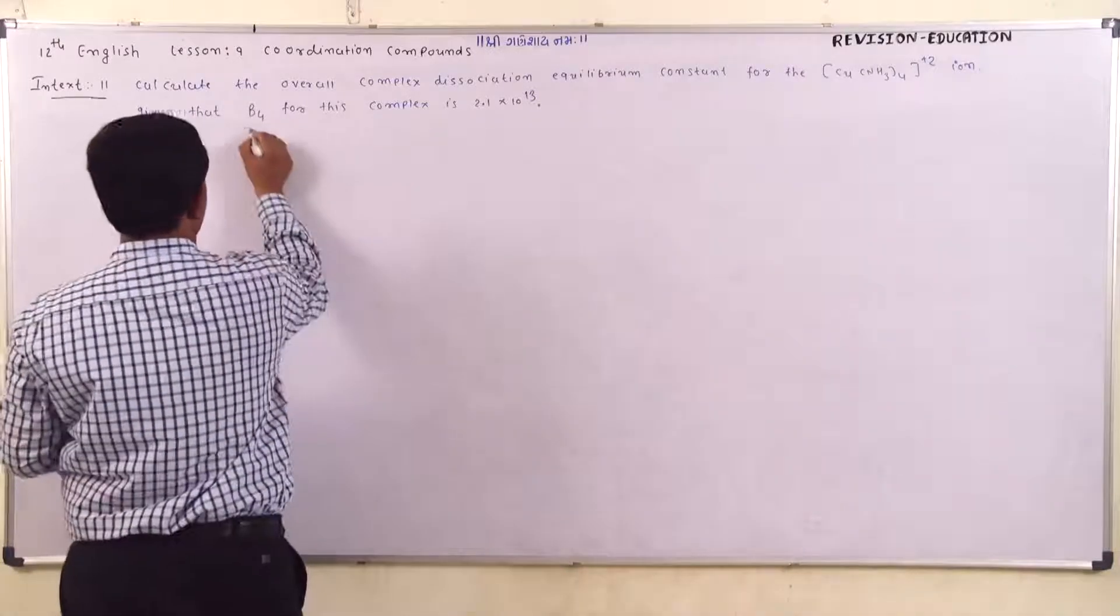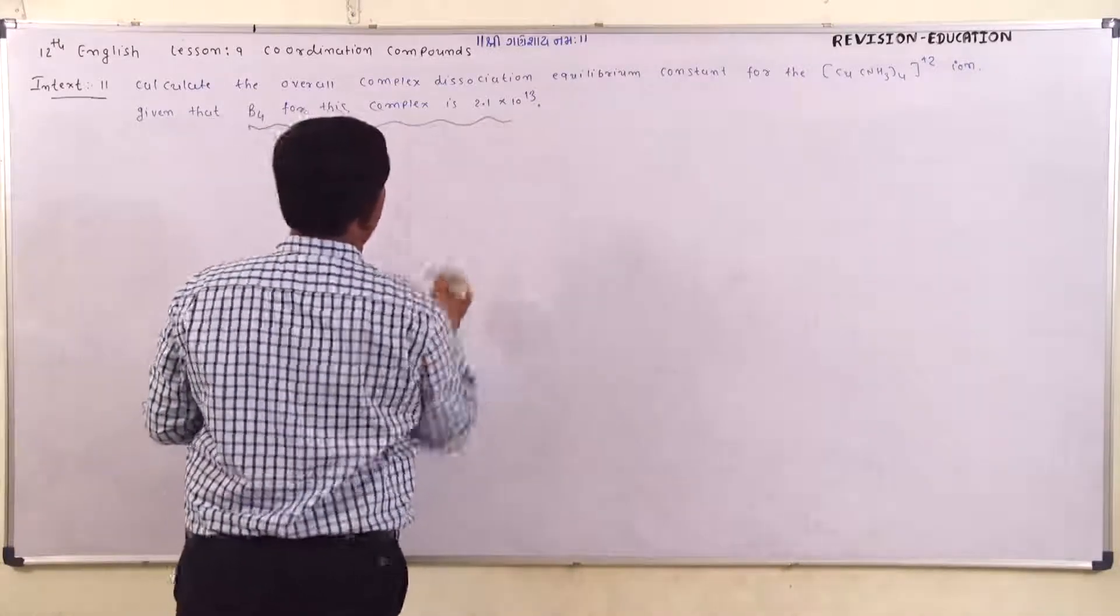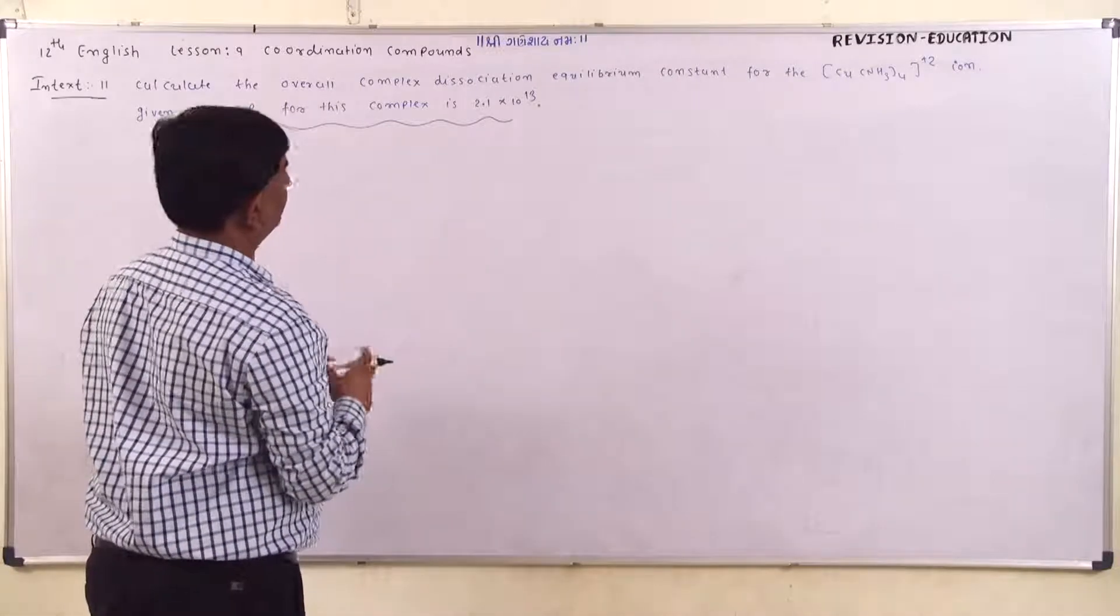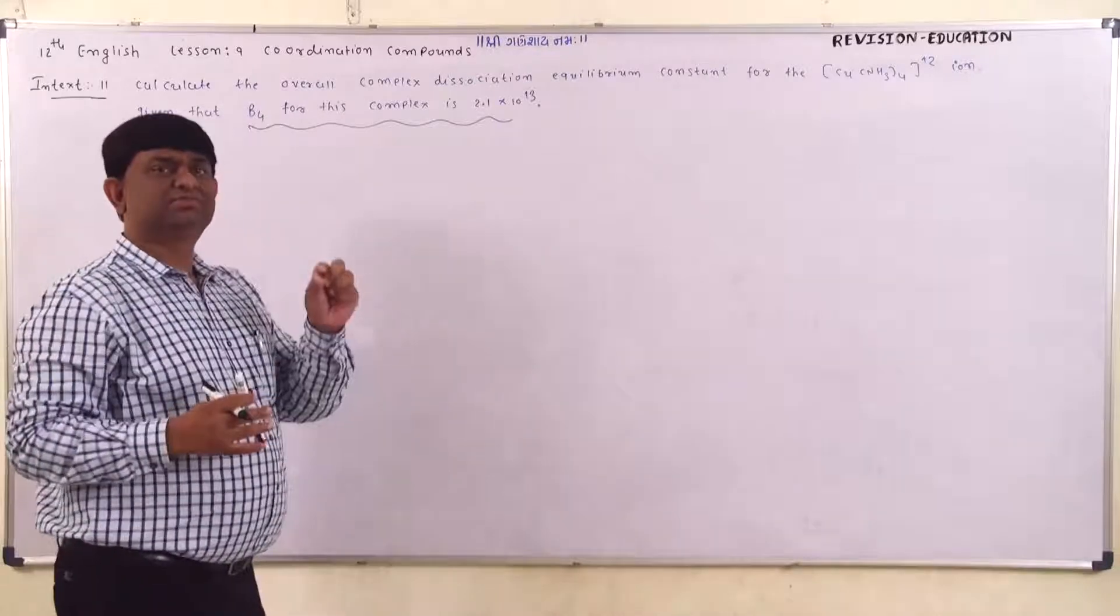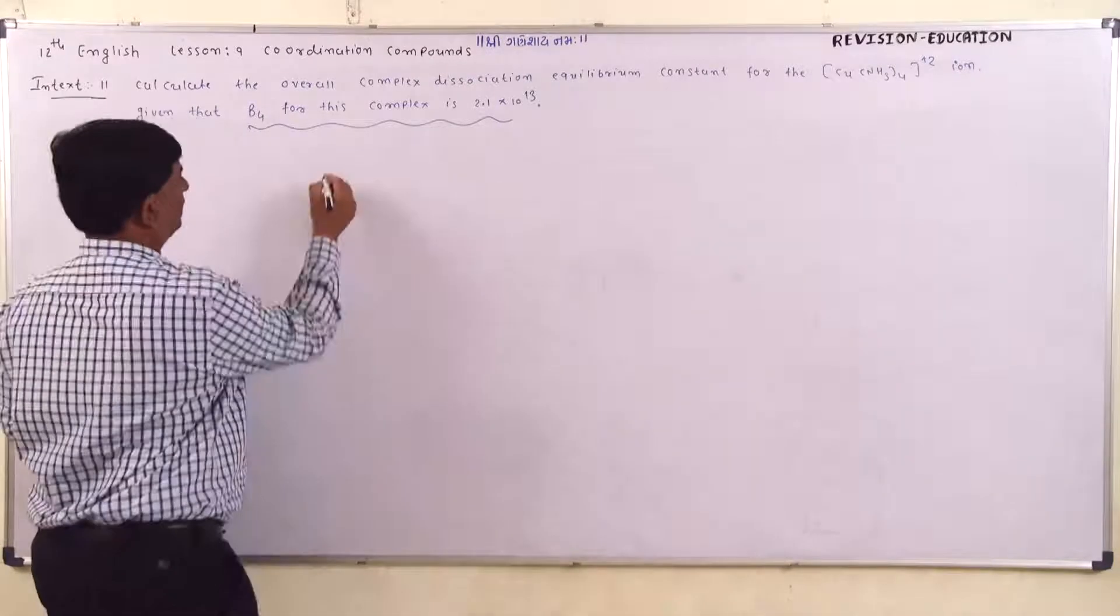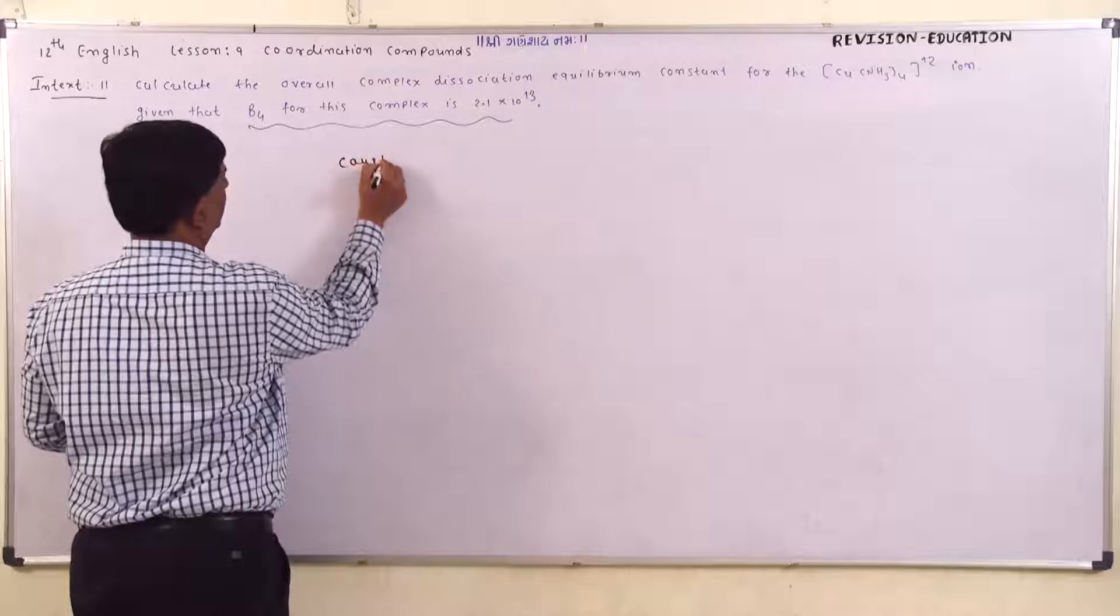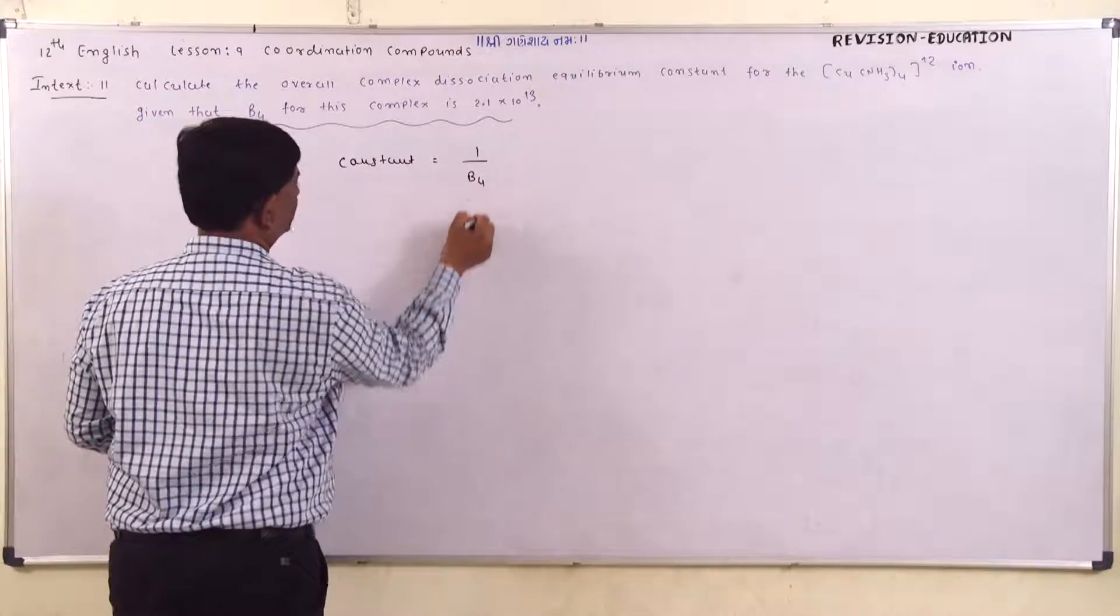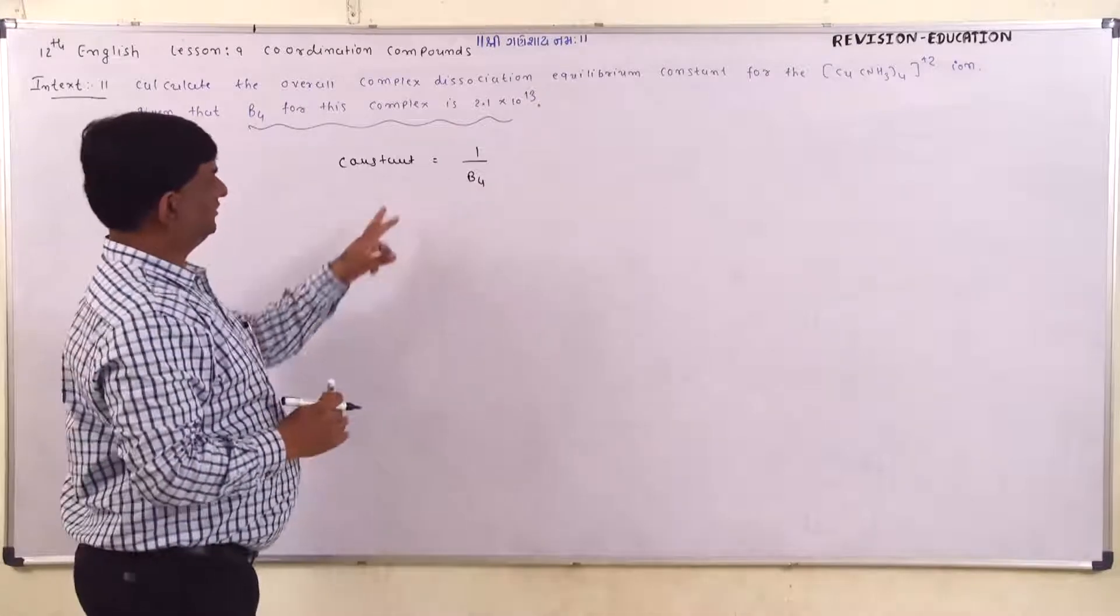Okay, this is a very simple numerical problem. The dissociation constant Kd equals 1 divided by β₄. This is the simple formula.